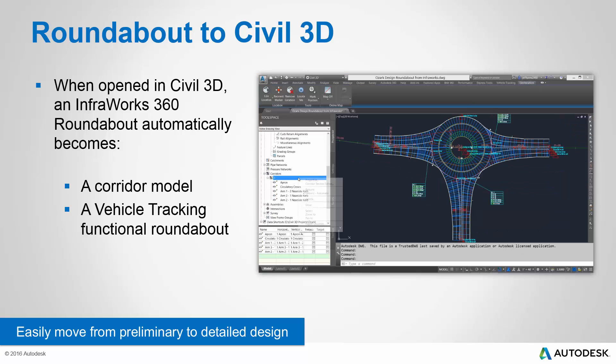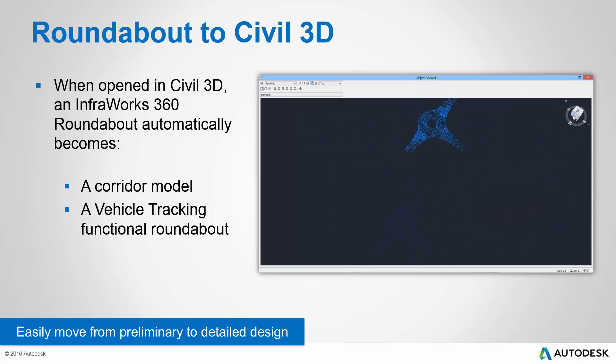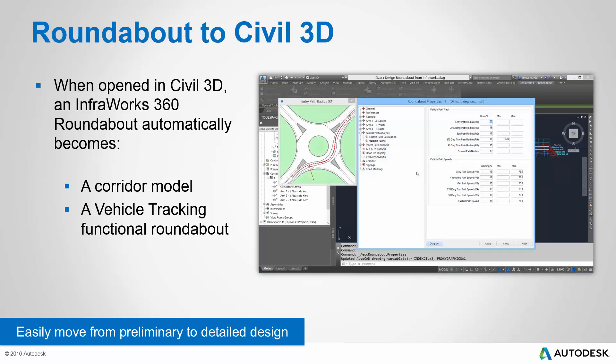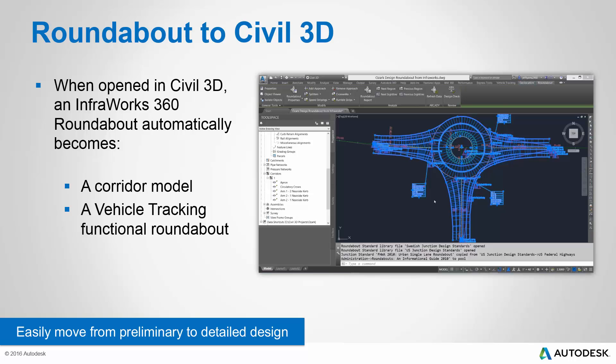In another example of extreme interoperability, when you open roundabout information in Civil 3D, not only does it automatically become a corridor model, it also becomes a functioning vehicle tracking roundabout, meaning you can use the Autodesk vehicle tracking tools to continue your detailed design of that roundabout. Again, this demonstrates the ability to easily move from preliminary to detailed design because of interoperability between InfraWorks 360 and Civil 3D.